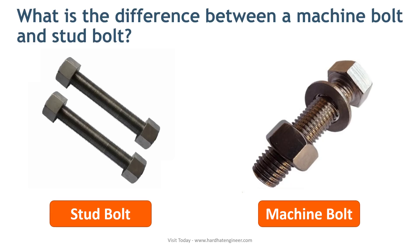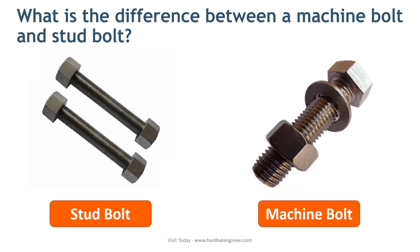What is the difference between machine bolt and stud bolt? This is sometimes confusing, especially for newcomers. Bolt and stud are very frequently used in flange joints, and some people use these terms interchangeably, but that is not correct. The machine bolt has a head on one side and a nut on the other side. But a stud bolt has threads on the full body and has a nut on both sides. In piping, machine bolts are used with non-metallic piping such as GRE, GRP, and FRP. For metallic piping, stud bolts are used.